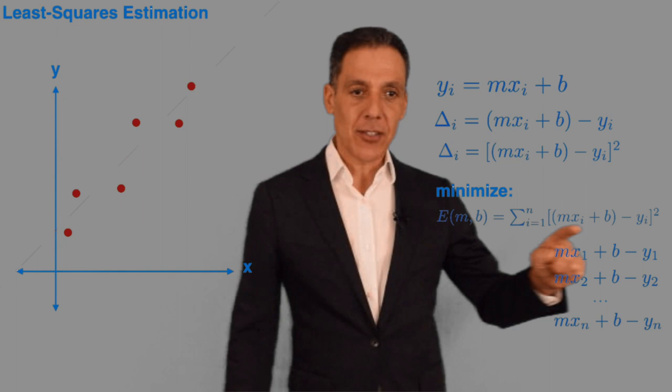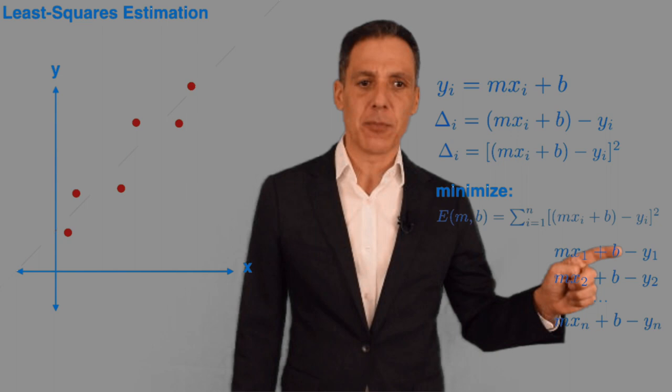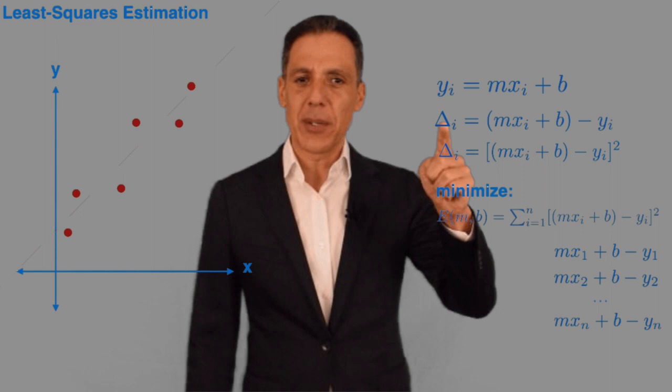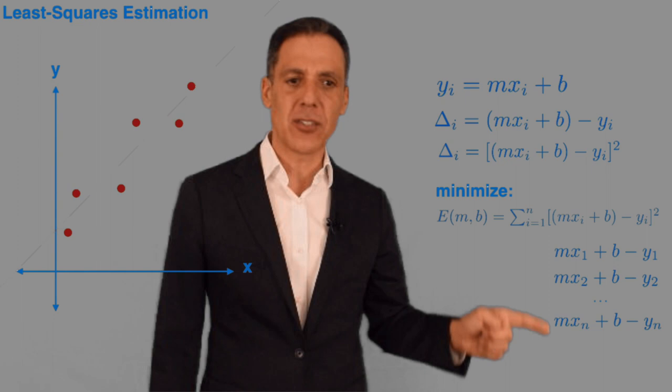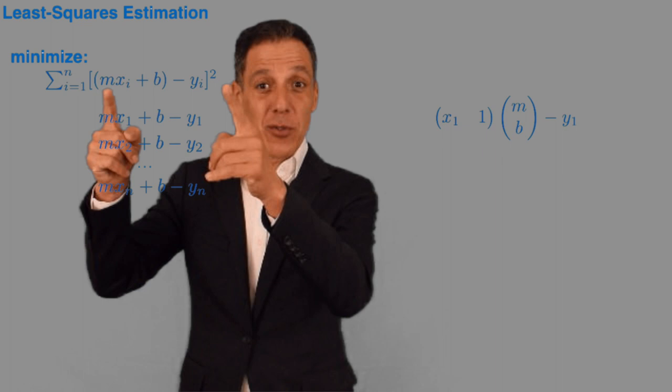So let me start by taking this error function and just expanding it out a little bit. I'm going to leave off the square now just to keep things simple. So inside of here is what? It's Mx1 plus B minus Y1. I'm just going back to the delta. So let's go back to that delta and think a little bit about how to write this in a linear algebraic way. So I've just got a whole bunch of these for each index i.